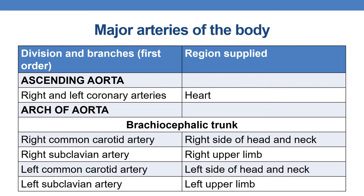Coming to the major arteries of the body, their divisions and first order branches, and the regions supplied: First, ascending aorta — branches are right and left coronary arteries, supplying the heart. Next, the arch of the aorta has the brachiocephalic trunk, composed of the right common carotid artery supplying the right side of head and neck, the right subclavian artery supplying the right upper limb, the left common carotid artery supplying the left side of head and neck, and the left subclavian artery supplying the left upper limb.